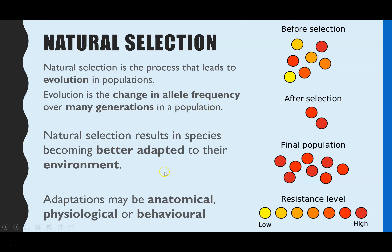Natural selection results in the species becoming better adapted for their environment. Thinking about antibiotic resistance in bacteria, compared to the original population where some individuals had very low resistance to antibiotics, the end population after many generations of natural selection are now all more adapted to their environment — in this example, inside a human who is taking antibiotics.